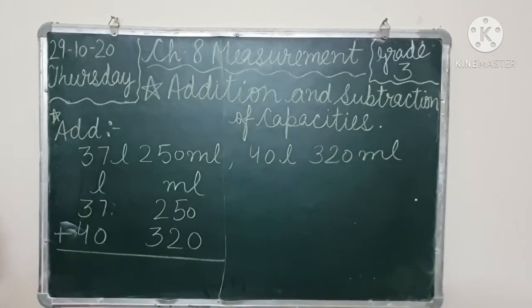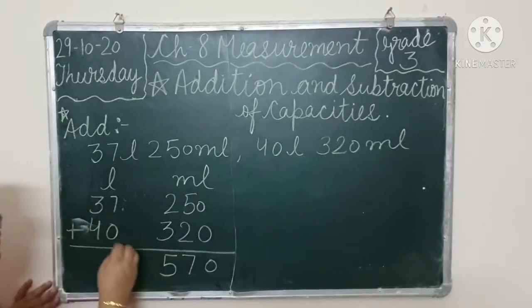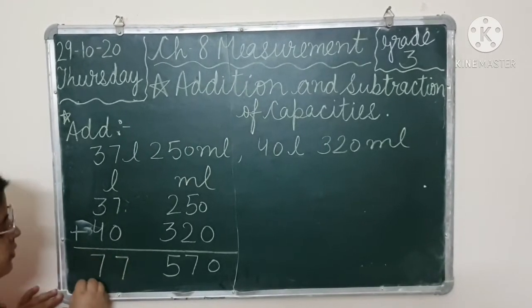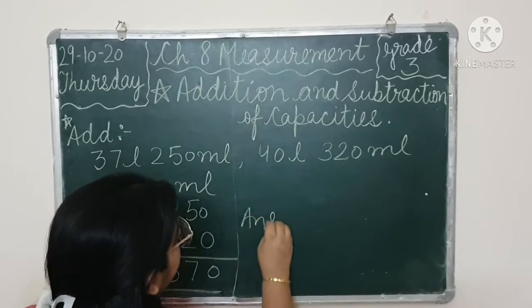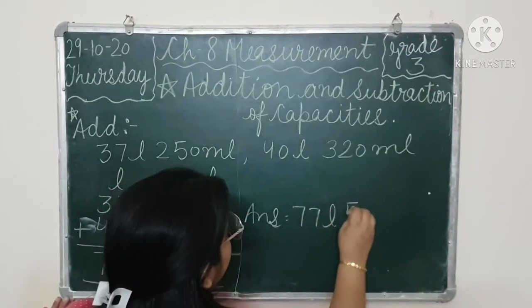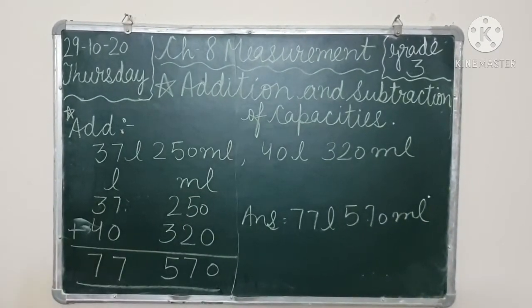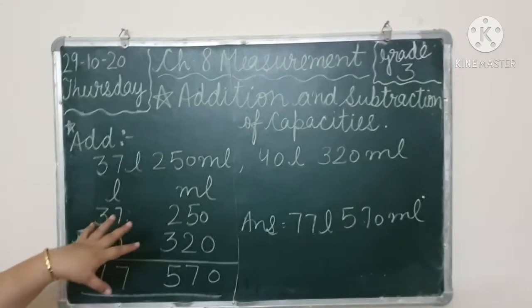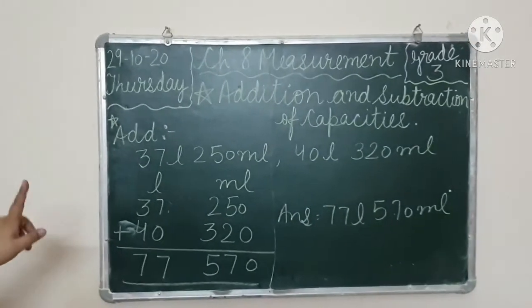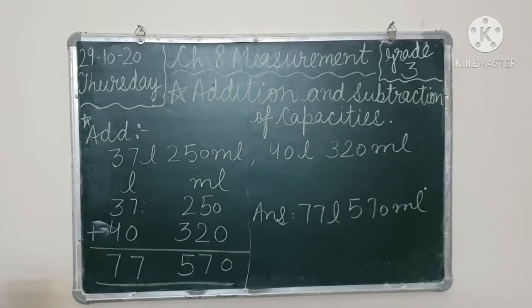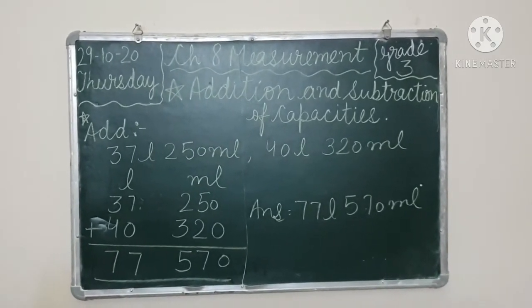Now we will add this. We just have to add. First addition. 0, 527, 325, 7 and 4, 37. So, our answer is 77. Our answer is 77 liter, 570 milliliter. Clear? In addition we make columns of liter and milliliter. After making columns, we put values inside. Liters in liters, milliliter in milliliter. Then add, and whatever answer comes will be in liters and milliliters.